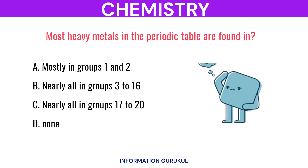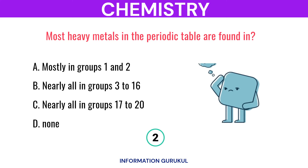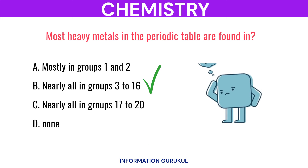Most heavy metals in the periodic table are found nearly all in groups 3 to 16.